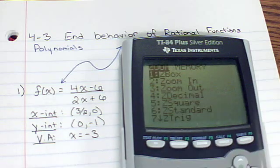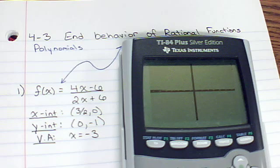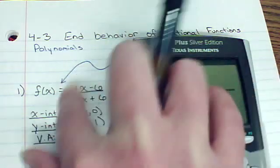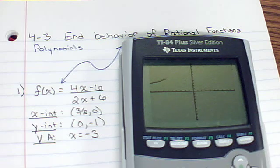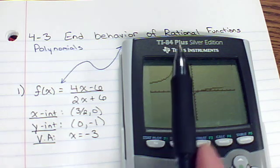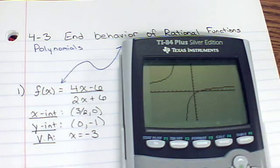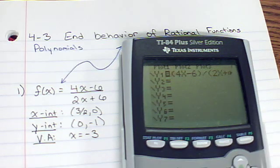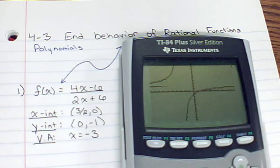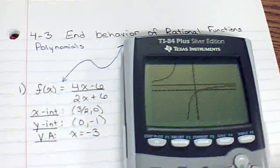It looks like it's kind of flattening out. Let's even zoom out. It's not going up or down like a polynomial. I'm going to go back to the standard view. It almost looks like we have a horizontal line there. Looks like it might be at 2. We do. We have what is called a horizontal asymptote at 2.